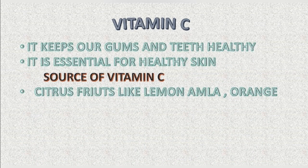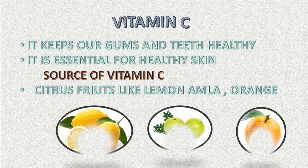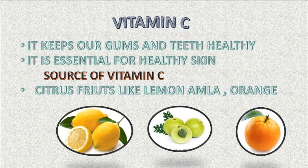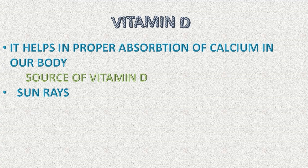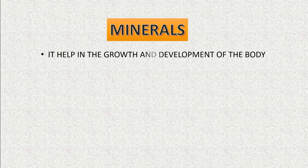Vitamin C keeps our gums and skin healthy; it is essential for healthy skin. Citrus fruits like lemon, amla and orange are good sources of vitamin C. Next is vitamin D — vitamin D helps in the proper absorption of calcium in our body, and sunrays are the main source of vitamin D.